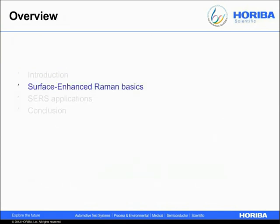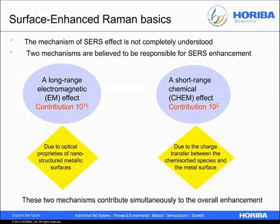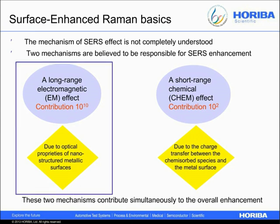Let's see some basic principles of the SERS effect. The SERS mechanism is not completely understood. There are two effects involved: one of them is the electromagnetic effect. Its contribution to the overall enhancement of the Raman signal is huge, approximately 10 to the power of 10. The other effect is the chemical effect, and its contribution is smaller, up to 10 to the power of 2. These two mechanisms contribute simultaneously to the overall enhancement. In the following, I will focus on the electromagnetic effect, which is more important for the SERS process.